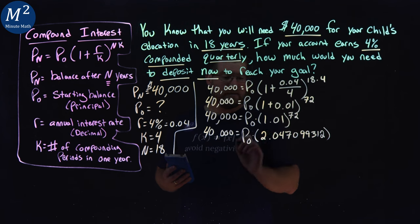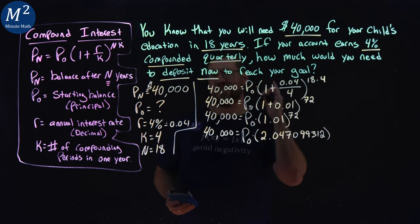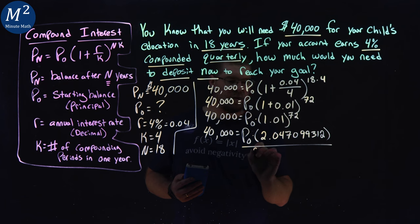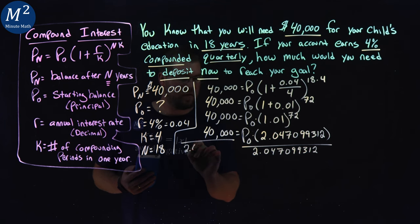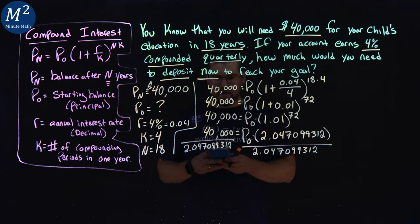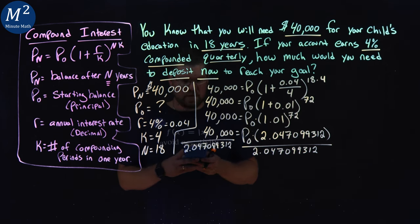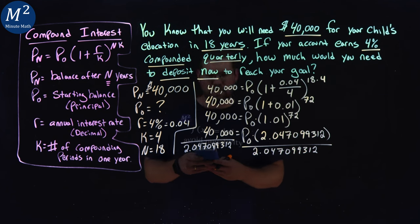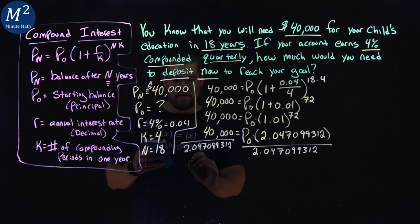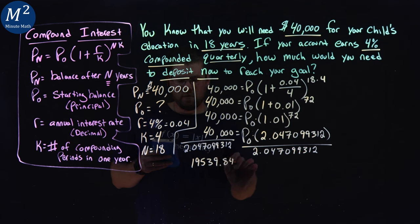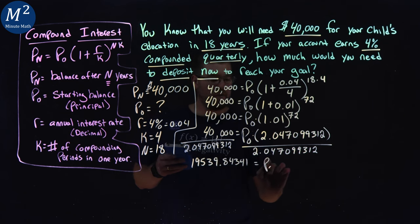So now this amount here, it's multiplication. Opposite of multiplication is, you guessed it, division. Divide both sides by that 2.047099312. So 40,000 divided by that amount, 2.047099312, is 19539.84341. And that's our P sub 0.